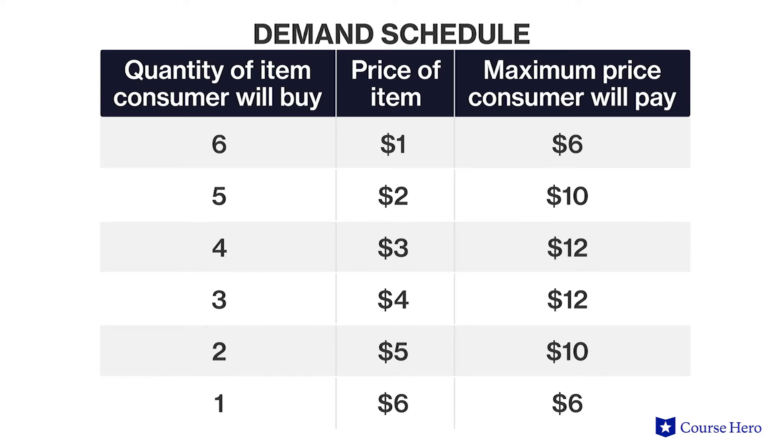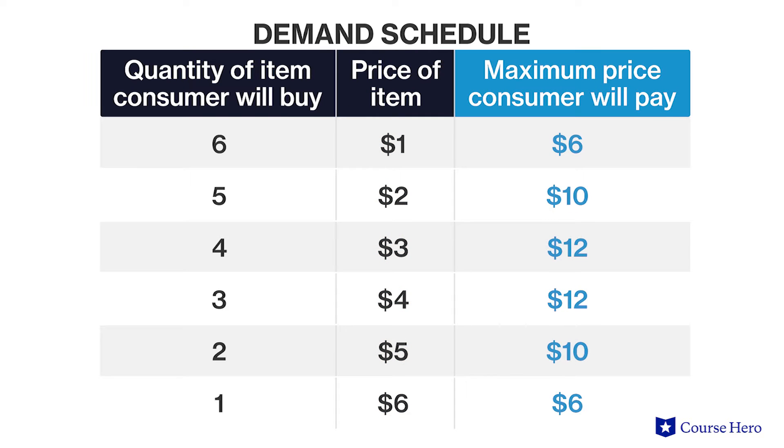A market is a group of buyers and sellers of a particular good or service. One person may buy a large quantity of an item when it's cheap, but they will buy less when the price is higher. A demand schedule is a table that shows the various quantities demanded of a good at different prices, and can also be used to show the maximum price a consumer would be willing to pay. Different people may buy different quantities at the same price depending on how much disposable income they have or how much they love a particular item. Taken together, all consumers interested in purchasing the same item constitute a market for that item, and the quantities they demand at different prices constitute the market's demand.